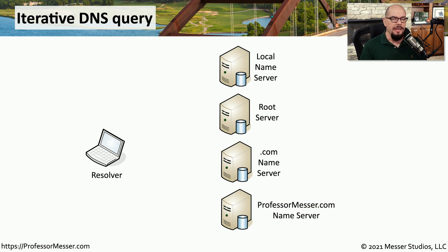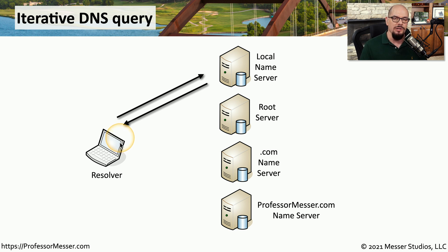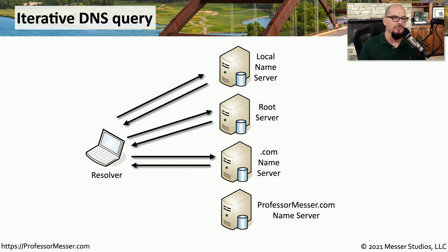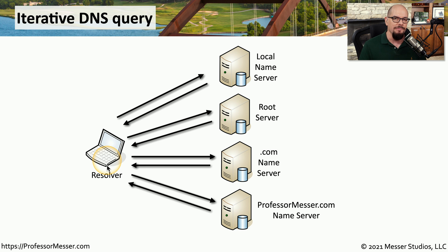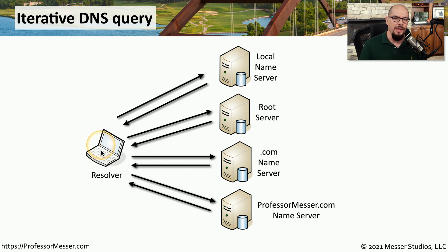With an iterative query, our local device has to do all of the work itself. The resolver may start communicating to the local name server to see if it knows what www.professormesser.com might be. If it doesn't, it tells you to talk to the root server. We talk to the root server, and it says to talk to .com. The .com server says to talk directly to the professormesser server. Finally, we find the correct DNS server and bring that information back to our original resolver. At that point, the local cache of this device is updated, and if this local machine needs to make the same query again, it can simply look at the local cache.